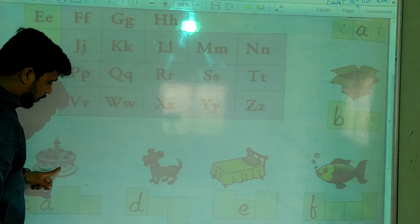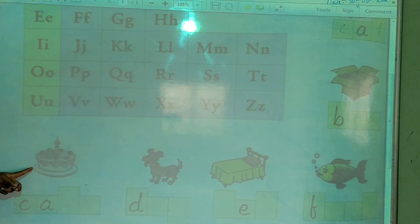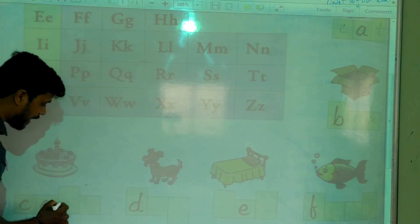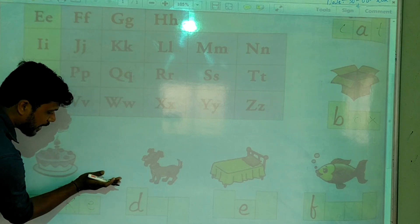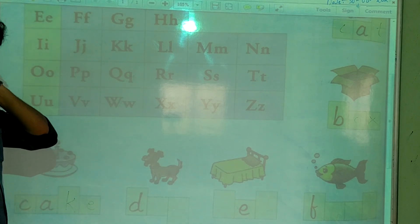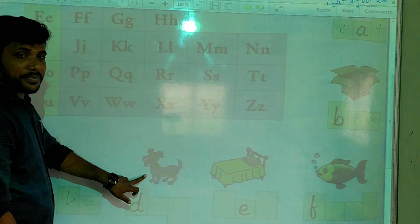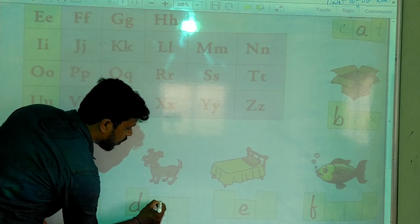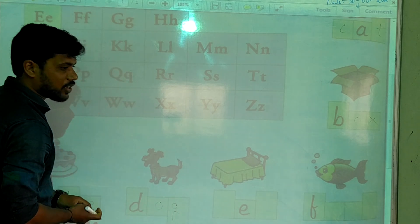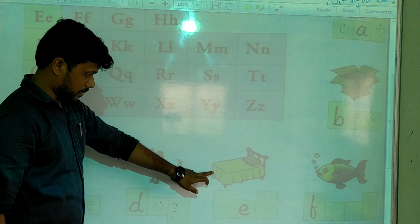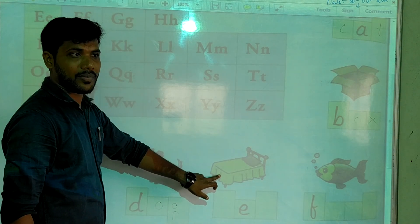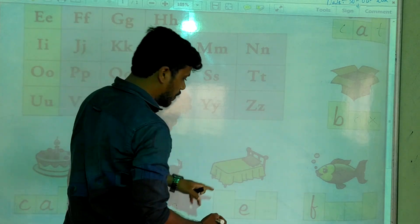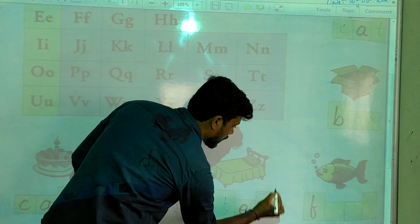And here, what is this picture? This is cake. Cake spelling: C-A-K-E. And this one? Dog. Dog spelling: D-O-G. And this one? Bed. Is this bed? Yes. Bed. B-E-D.